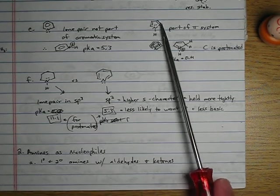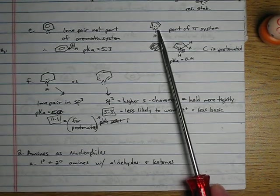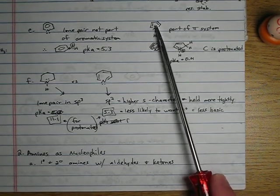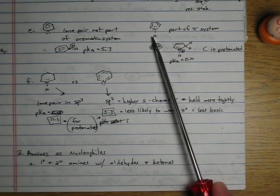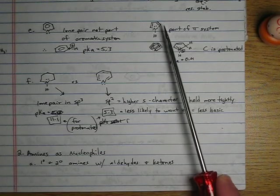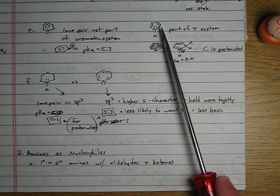But that is the case when you have these lone pairs not part of the aromatic ring. But what if you have pyrrole where the lone pair is part of the aromatic ring? If you took this lone pair and bonded it to a hydrogen, this is no longer aromatic. It doesn't follow Huckel's rule anymore. Well, that's going to not want to happen, right?